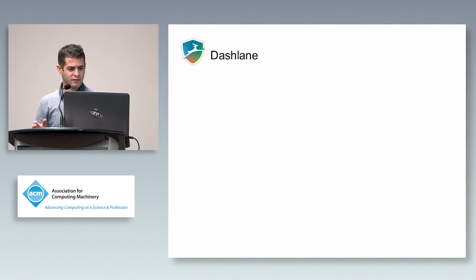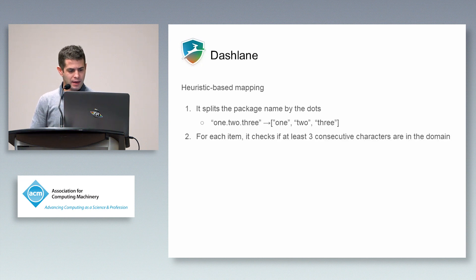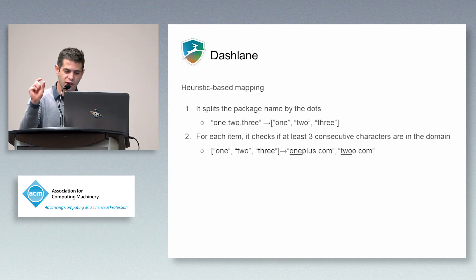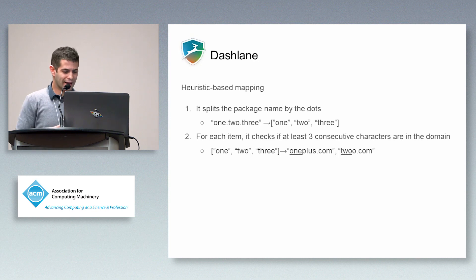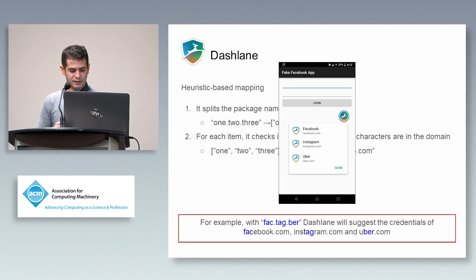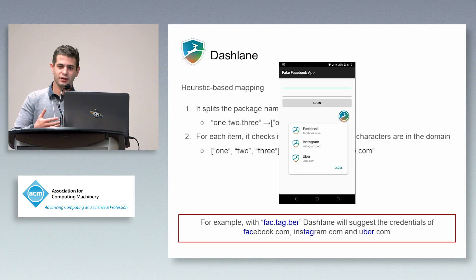Dashlane behaves in quite the same way, with the difference that since it splits the domain name by the dots, it checks if at least three consecutive characters are present in the domain. Here the exploitation is even more powerful, because with a package name like F-A-C-T-A-G-B-E-R you are able to get several credentials suggested.